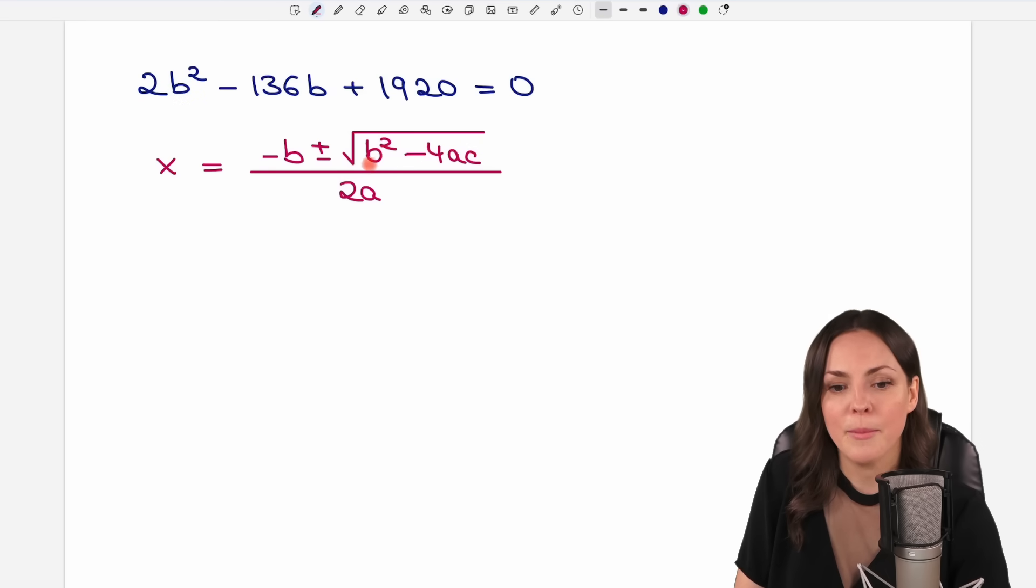But we have to find A, B, and C. So what is my A? What is my B? And what is my C? A is always the number in front of the squared part. So squared is here. So the 2 is my A. B is always the number in front of the variable that stands just by itself. So it's the negative 136. And C is always the number that doesn't have any variable. So it's the 1920.